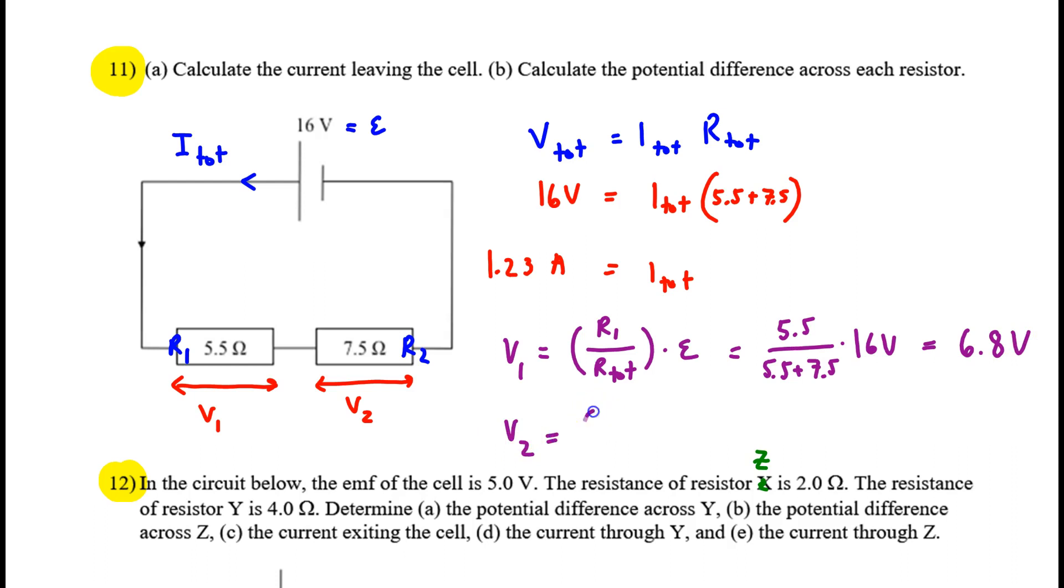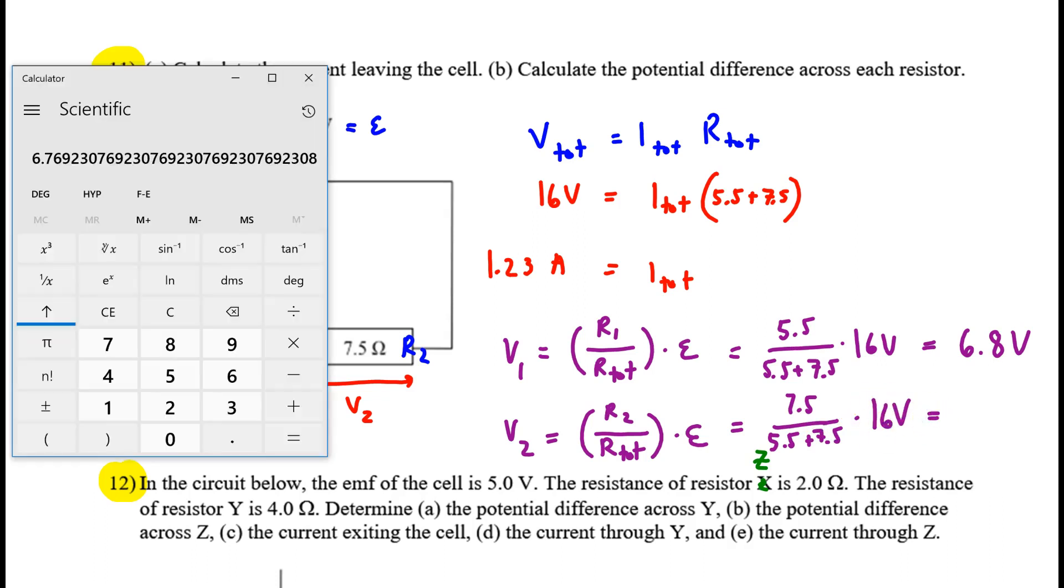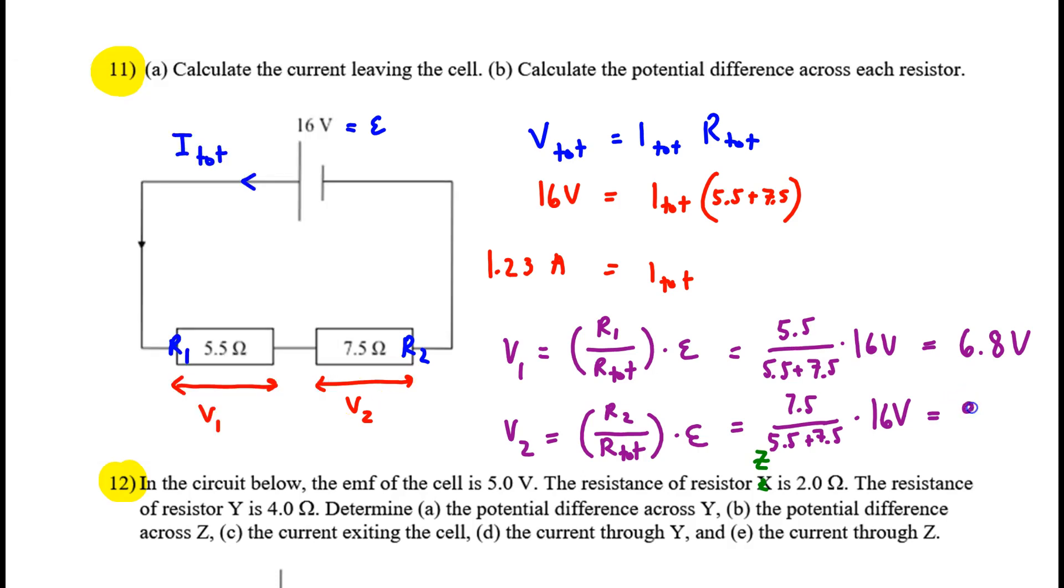We do the same thing down here. V2 consumes some fraction of the EMF. It consumes the fraction equal to the relative resistance. So it contributes 7.5 ohms out of a total of 13. So we multiply that by the EMF. Let's do 7.5 over 13 times 16, which is 9.2. As a nice check, if you add these values together, they should total to 16, and in fact they do.